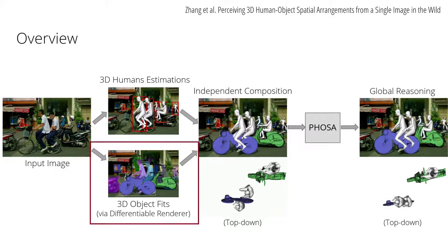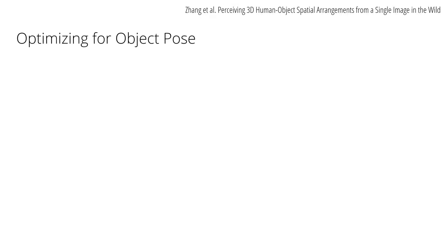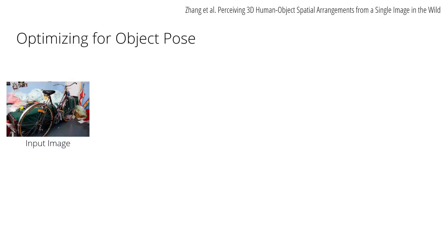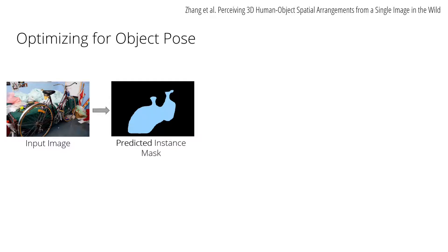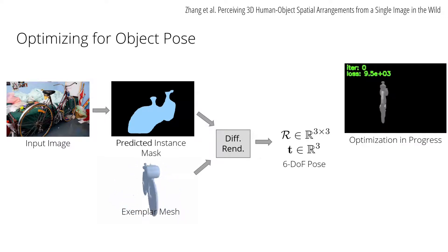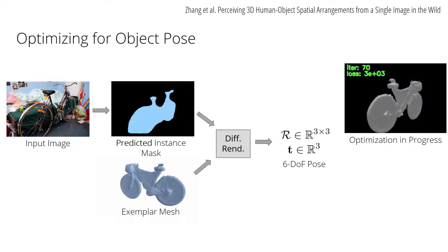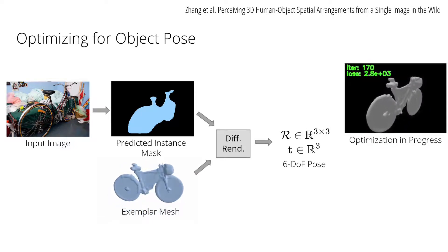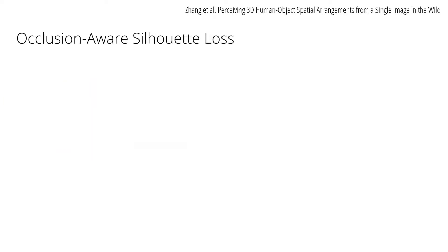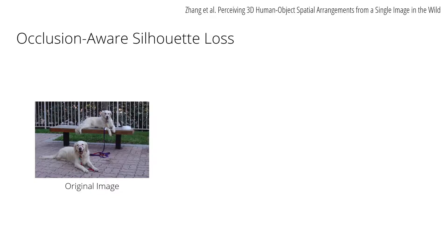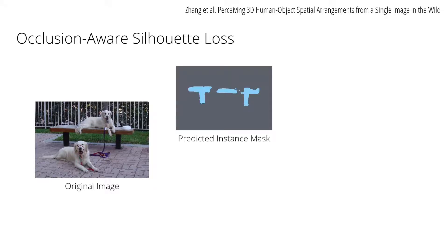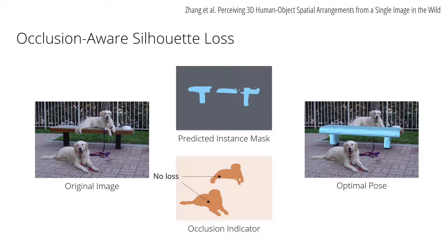Let's start with 3D object estimation in detail. We use an exemplar model to represent object shape, and then optimize its pose using a differentiable renderer. More concretely, for each image, we use PointRend to predict an instance mask. Given an exemplar mesh, we use a differentiable renderer to solve for the 6-DoF object rotation and translation that minimizes the silhouette reprojection error. In order to account for the fact that objects are often occluded in the wild, such as the bench in this picture, we use an occlusion-aware silhouette loss. The loss tries to match the silhouette to the predicted target mask from PointRend while ignoring regions occluded by other objects.